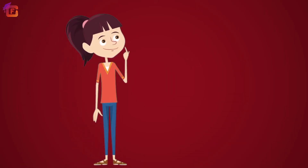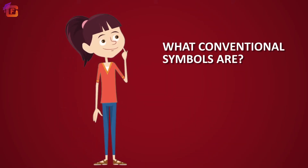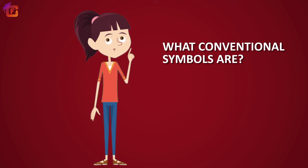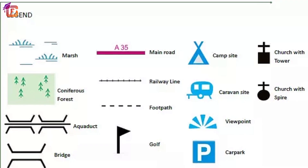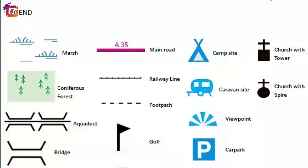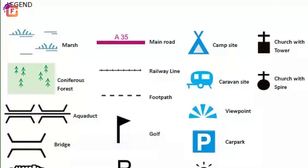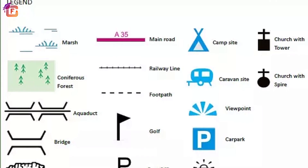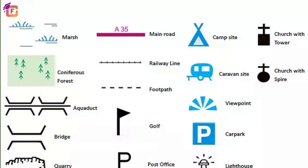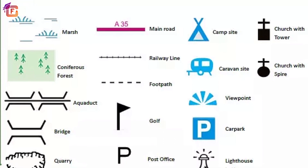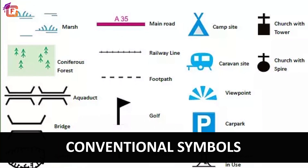Maps have a common language that all can understand. In relation to the use of these symbols, there is an international agreement. These are called symbols that are conventional.